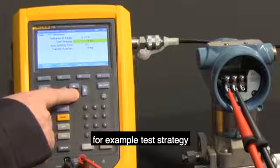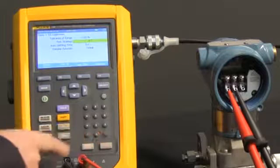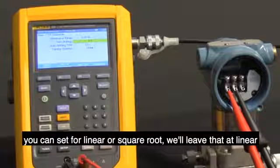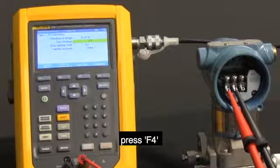For example, Test Strategy, we're going to select 3 up. Auto Settling Time, we'll leave at 5 seconds. In the transfer function, you can have set for linear or square root. We'll leave that at linear. Press F4.